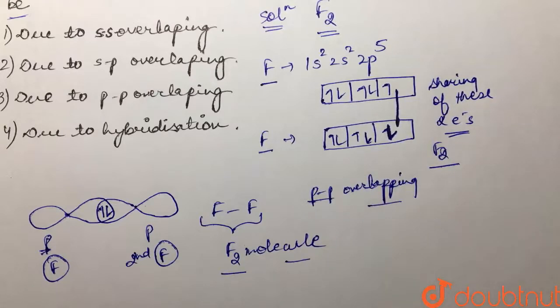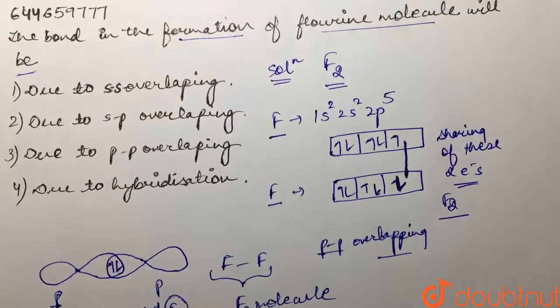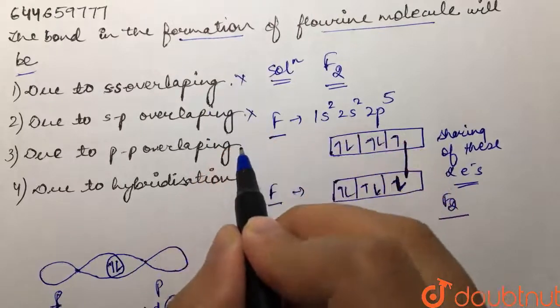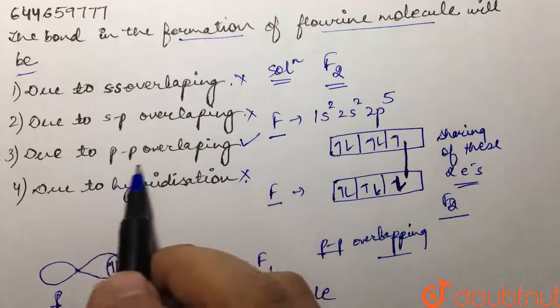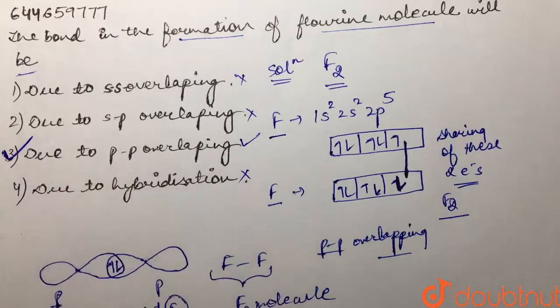So if you look at our options: first is saying SS overlapping which is not correct, SP not correct, PP overlapping is correct, due to hybridization not correct. So over here our answer is answer number third.